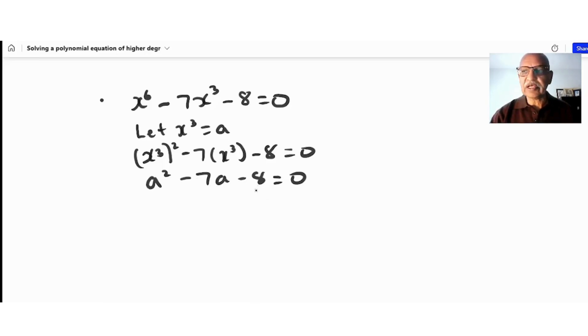What are the two factors? This will be (a - 8)(a + 1) = 0. Therefore, a = 8 or a = -1.